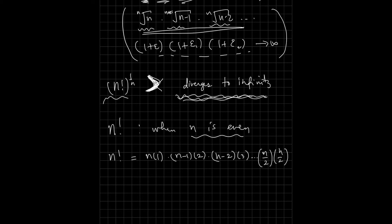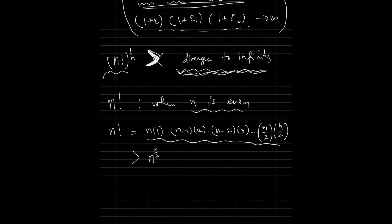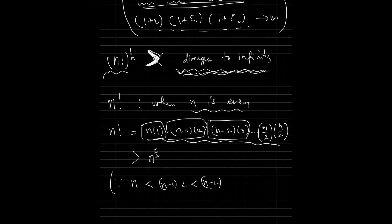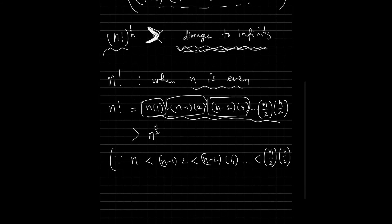Take some time to convince yourself that this is the case. We can now make the claim that this whole expression is greater than n raised to the power n over 2. The reason is that each product in the pairing is less than the next, and the greatest product is n over 2 times n over 2. There are n over 2 such pairs, which is why the exponent is n over 2.